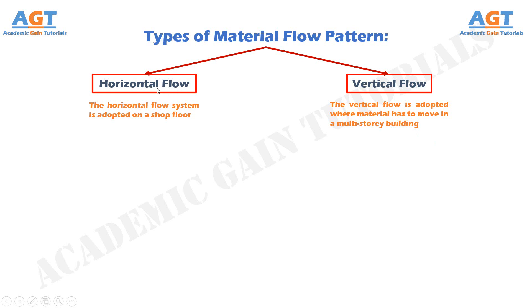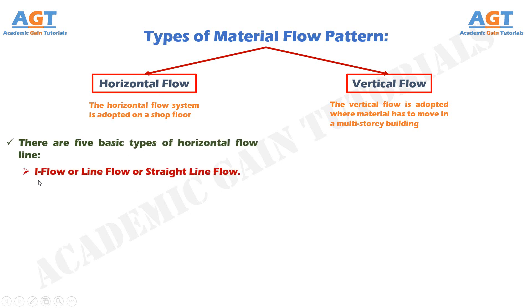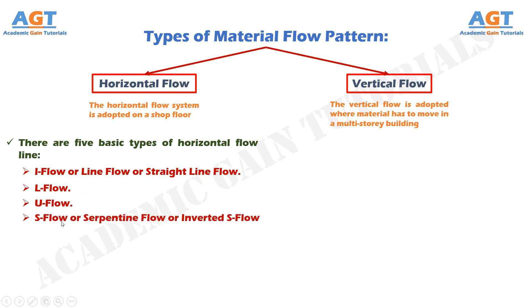There are five basic types of horizontal flow line. Number 1: I flow, or line flow, or straight line flow. Number 2: L flow. Number 3: U flow. Number 4: S flow, or serpentine flow, or inverted S flow. And number 5: O flow.